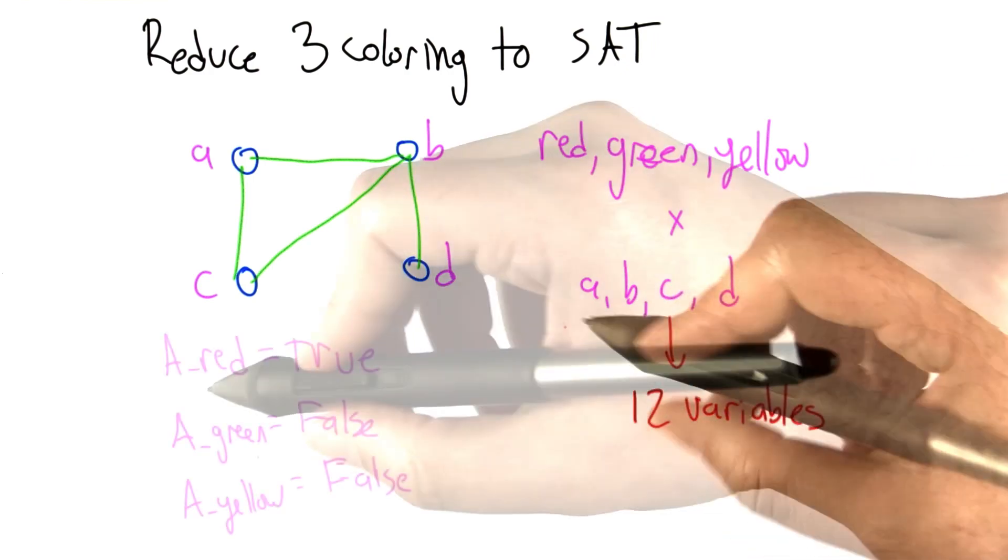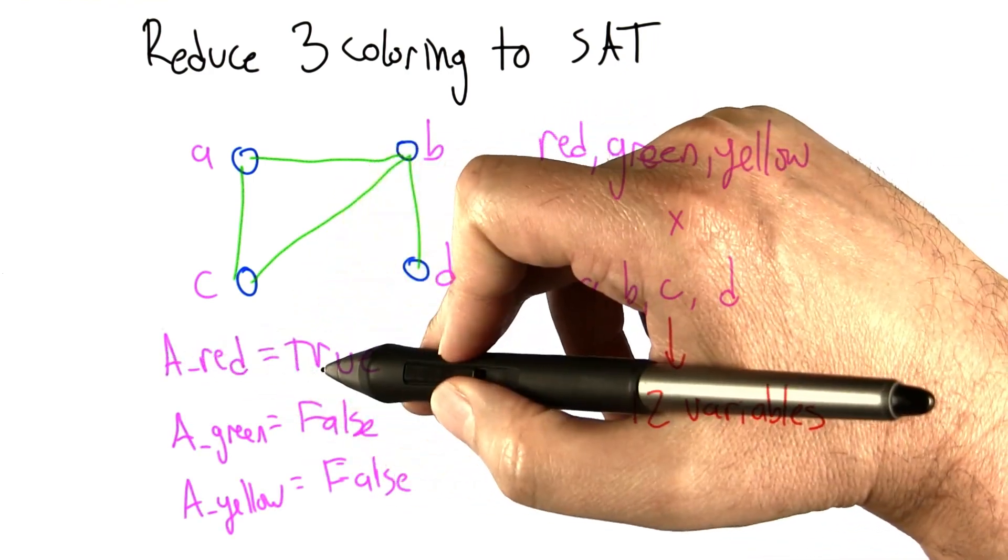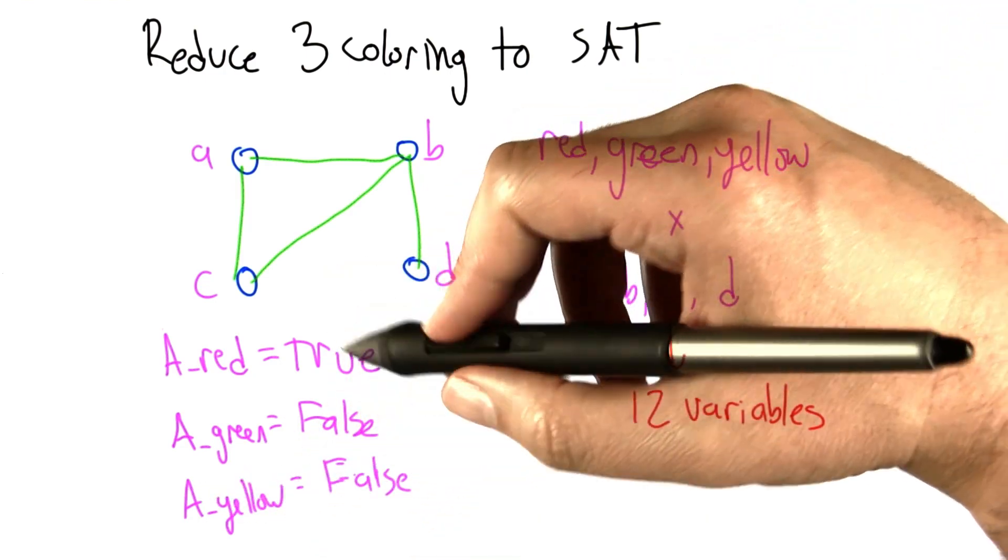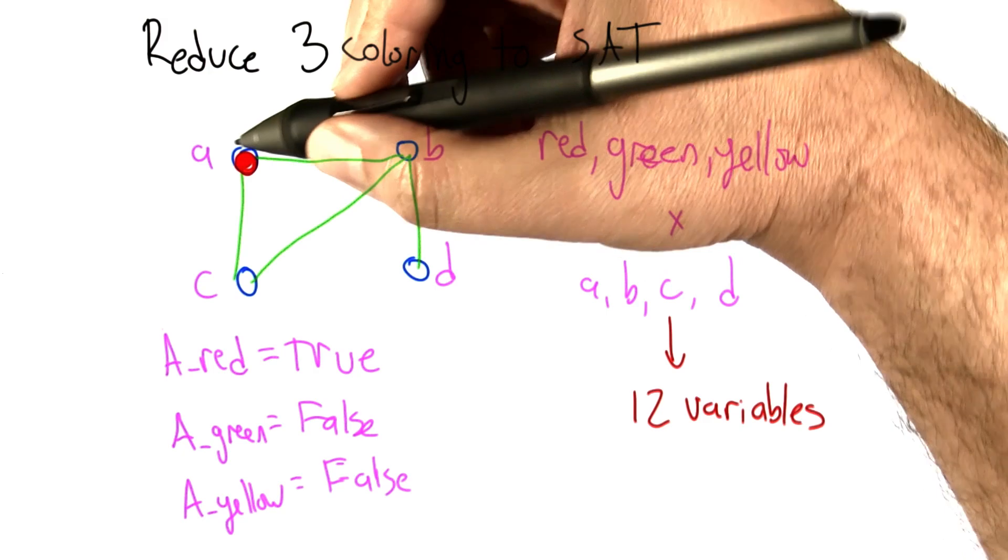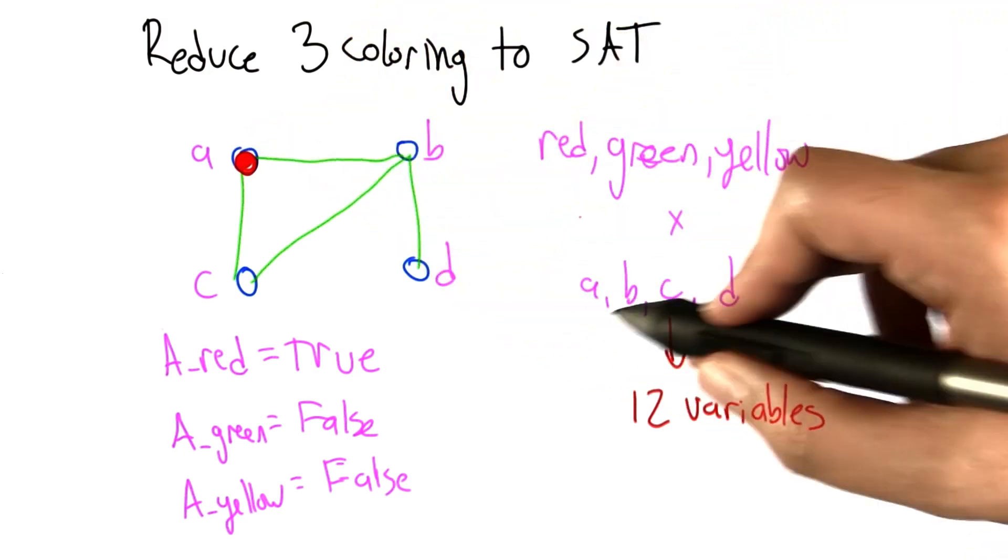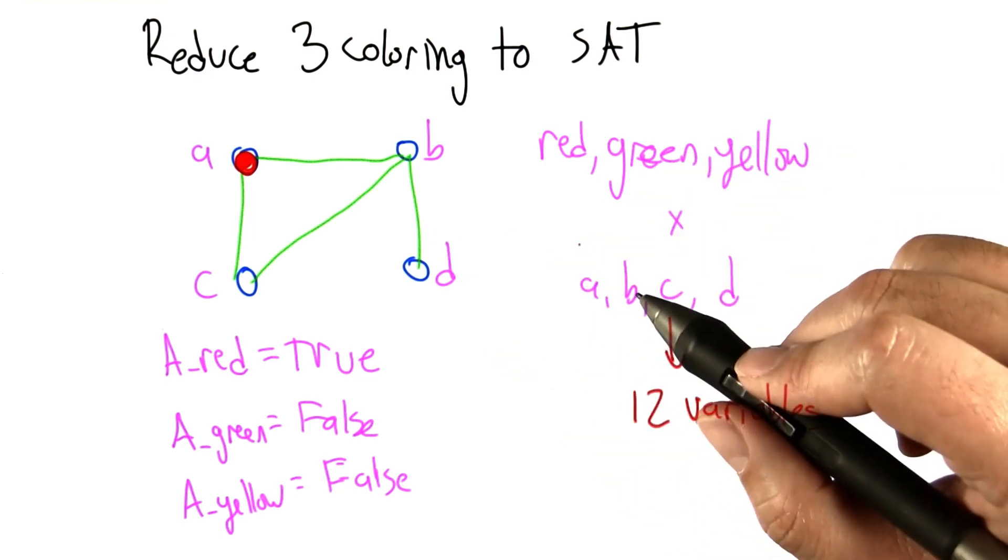So, for example, assigning the variable A_red to true, A_green to false, and A_yellow to false, means that we're coloring the A node red. And so once we've assigned truth values, trues and falses to all 12 of these variables, that corresponds perhaps to some coloring.